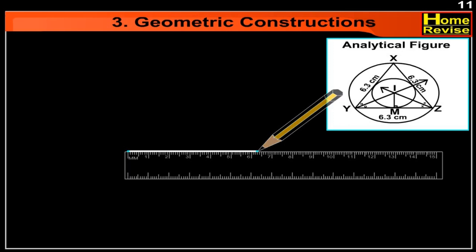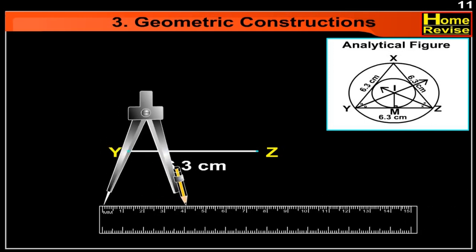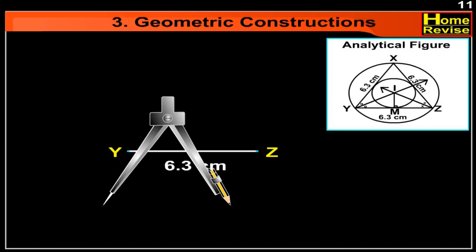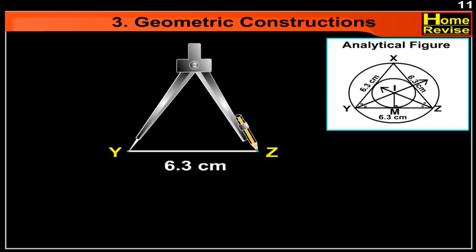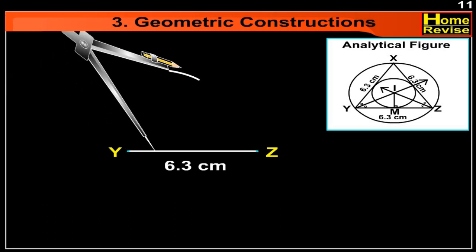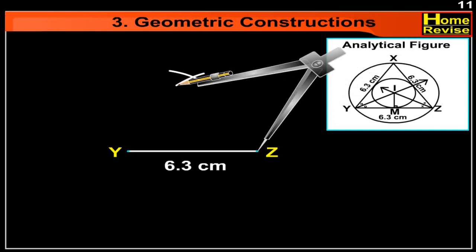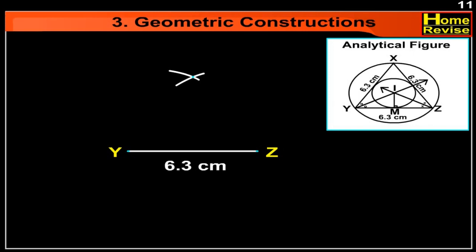Let us measure the distance 6.3 cm on the compass. Keeping the point of the compass at Y, let us draw an arc to the upper side of segment YZ. Keeping the distance constant, let us keep the point of the compass at Z and draw an arc intersecting the earlier arc. This is our point X. Let us draw segment XY and segment XZ.